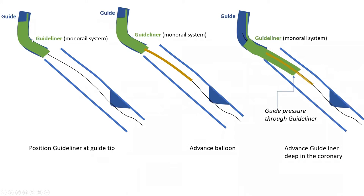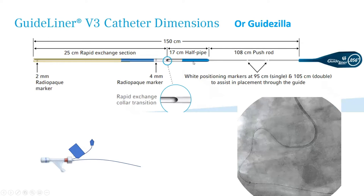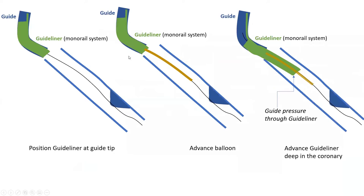So the steps are: advance the guideliner over the wire, then advance a monorail balloon over that wire in monorail fashion, then advance the guideliner over the balloon. You can advance the guideliner as deep as close to 20 centimeters into the artery to get support over a balloon catheter. When you advance the guideliner, the guide and the guideliner become one unit in sync. The guide is wedged by the guideliner, so the pressure displayed on the monitor is not from the tip of the guide — it's from the tip of the guideliner, because the guide is wedged.